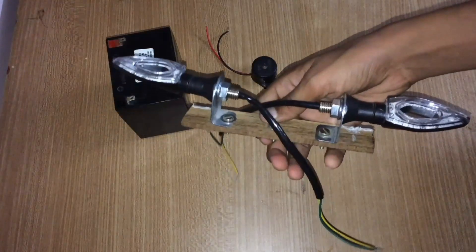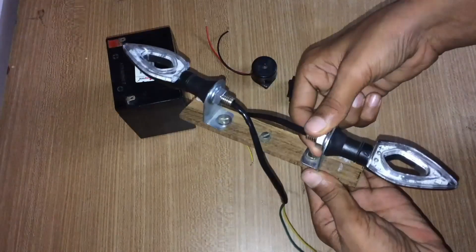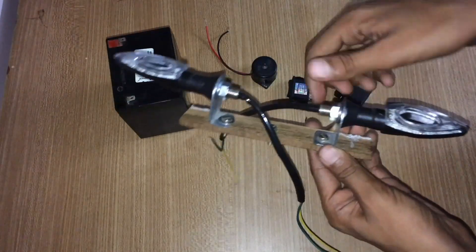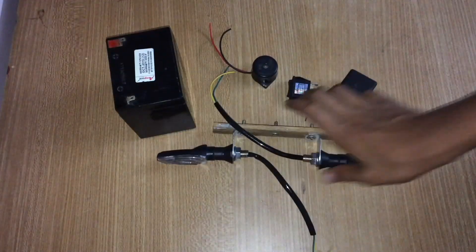So join them to the L-clamps, remove the bolt over there, slide the indicator inside the hole and tighten the bolt up. Let's get started.